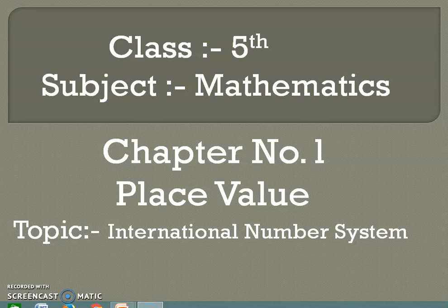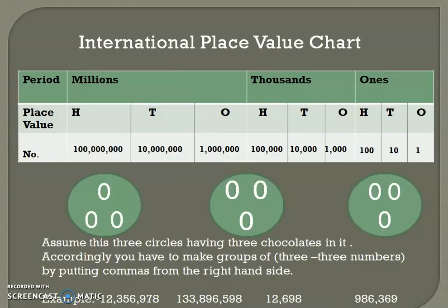This is our topic in Chapter 1, which is place value. In this chapter we are going to learn how we can put commas according to the international number system, and how we can write the given number in words after separating the number.